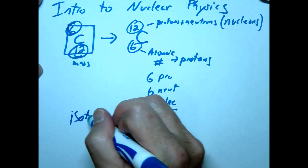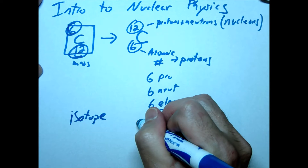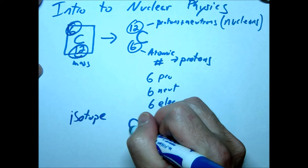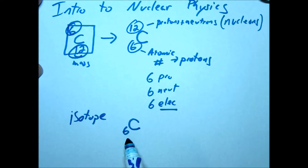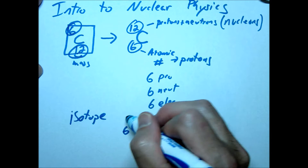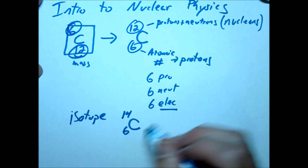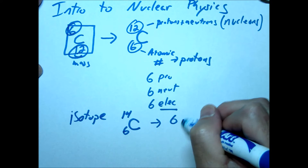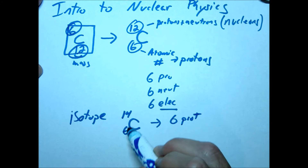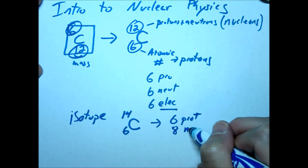What about an isotope? What's an isotope? An isotope is the same atom — meaning the same number of protons — but a differing number of neutrons. So for example, if we have carbon-14, this would be 6 protons, and 6 plus 8 means we'd have 8 neutrons.